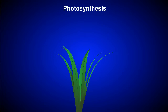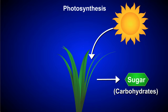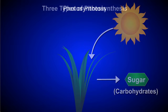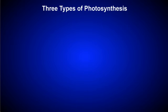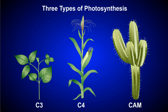Photosynthesis is the process by which plants capture the energy of the sun to make carbohydrates. But there are minor variations in how plants do this, depending on the environment in which the plant lives. In this tutorial, we'll look at the differences between the three types of photosynthesis: C3, C4, and CAM.